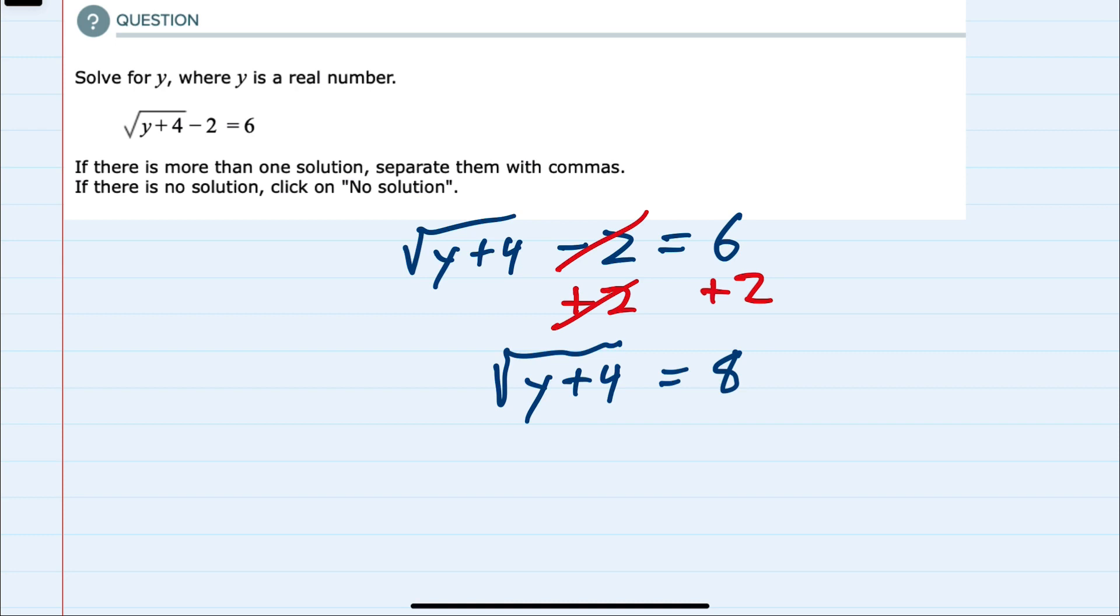And then to remove the radical, since it's a square root, I can now square both sides of the equation. And on the left-hand side, the square root and the square cancel, leaving me with just the y plus 4.